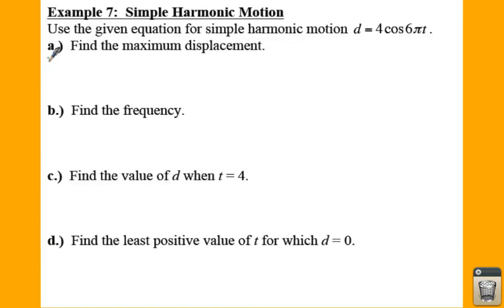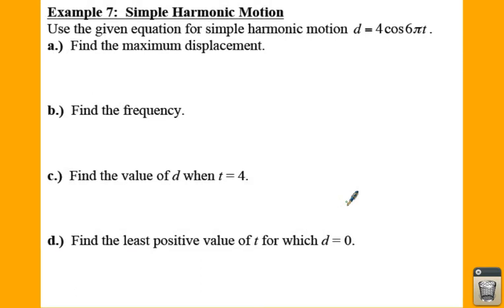So here's what happens in Example 7 when you are given an actual equation. When you're given the equation d equals 4 cosine of 6 pi t, your maximum displacement is 4. So if we're going to find our maximum displacement, that is going to be our 4 value. That's your amplitude, but that's also your maximum displacement from your equilibrium. So you would say that d is equal to 4.